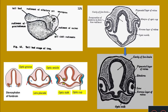The optic vesicles grow and they come in contact with the ectoderm of the head. The outermost layer of the head is called as the ectoderm. The optic vesicles are growing and coming in contact with the head ectoderm; they start as pouches but as they grow towards the outer surface they come in contact with the head ectoderm.